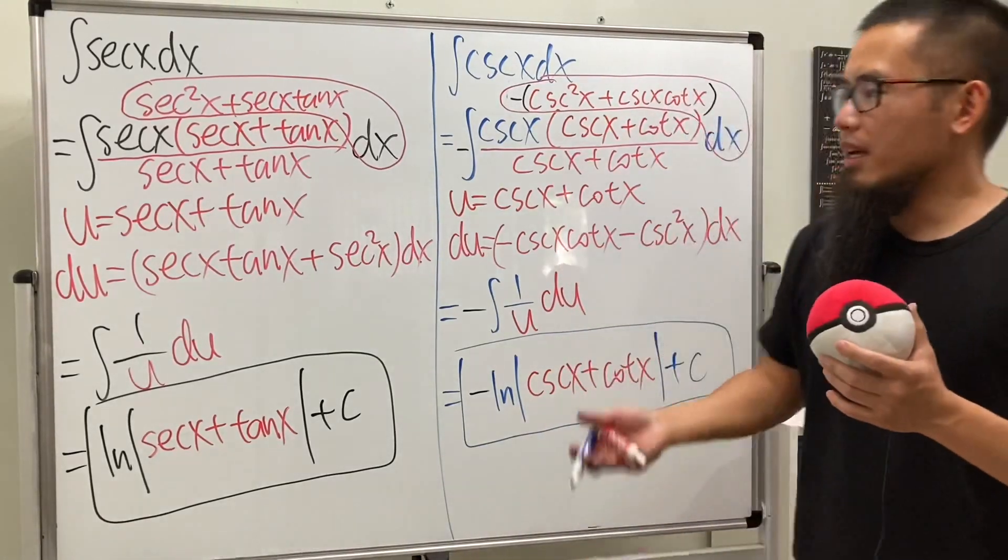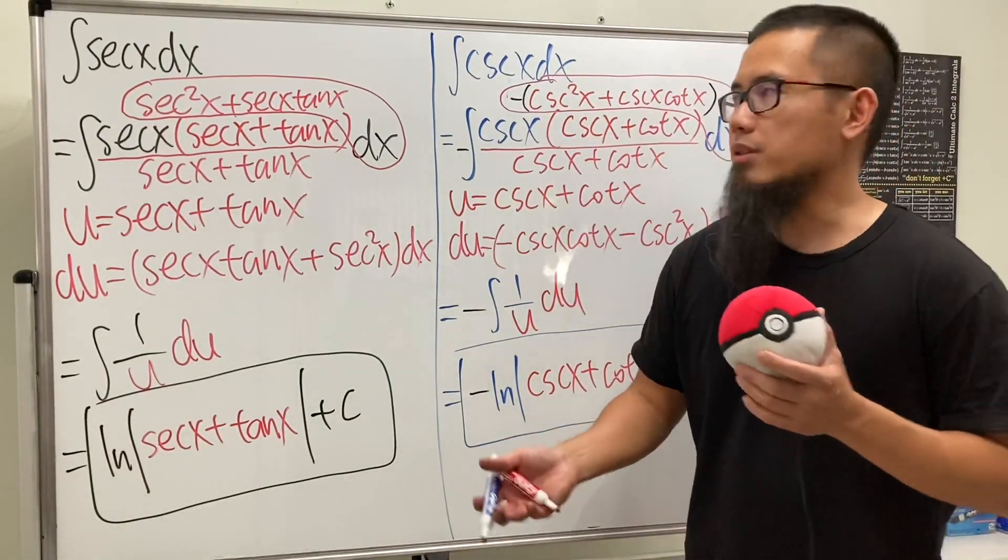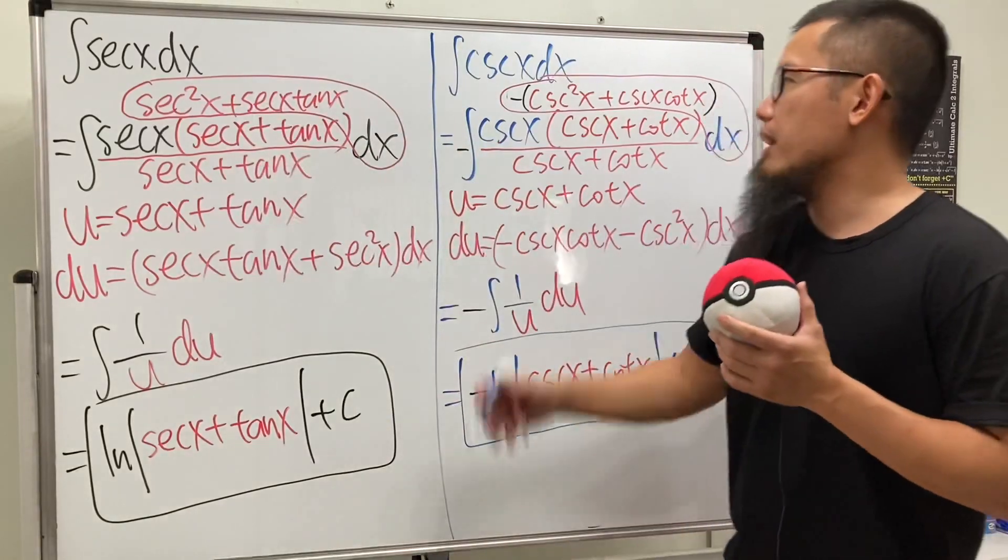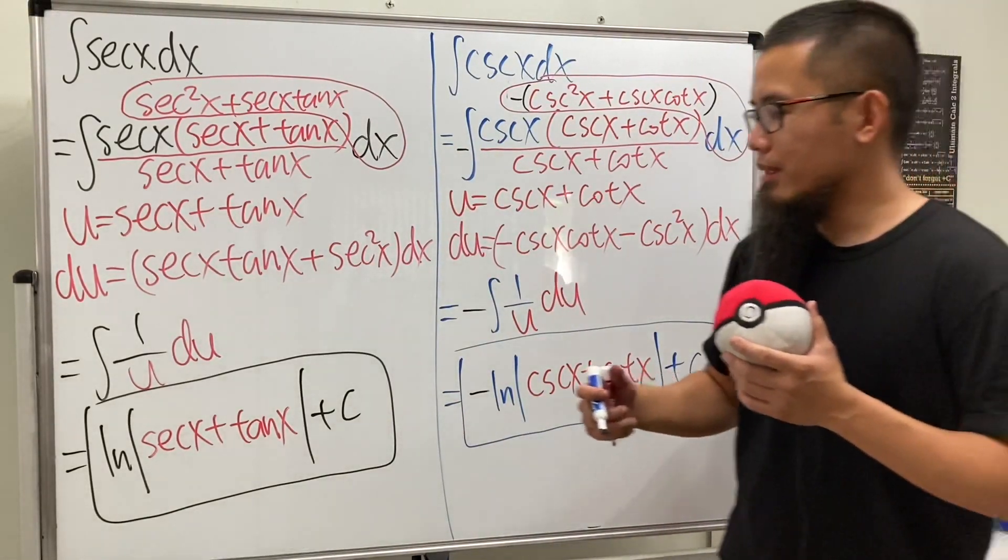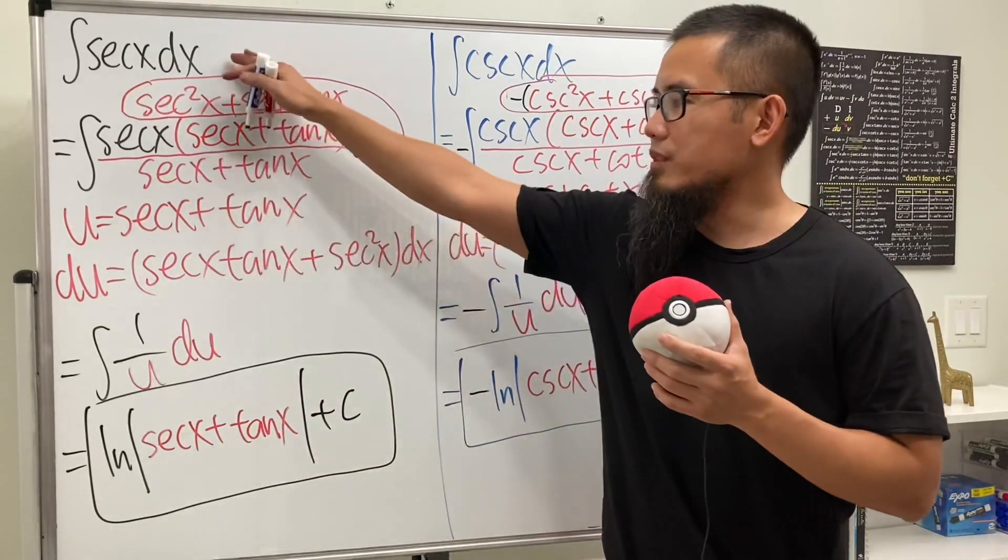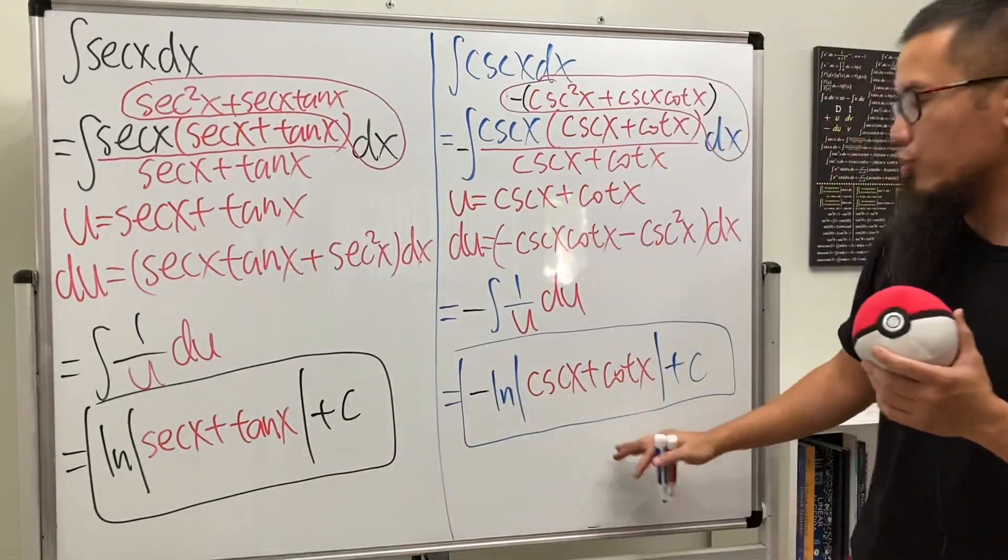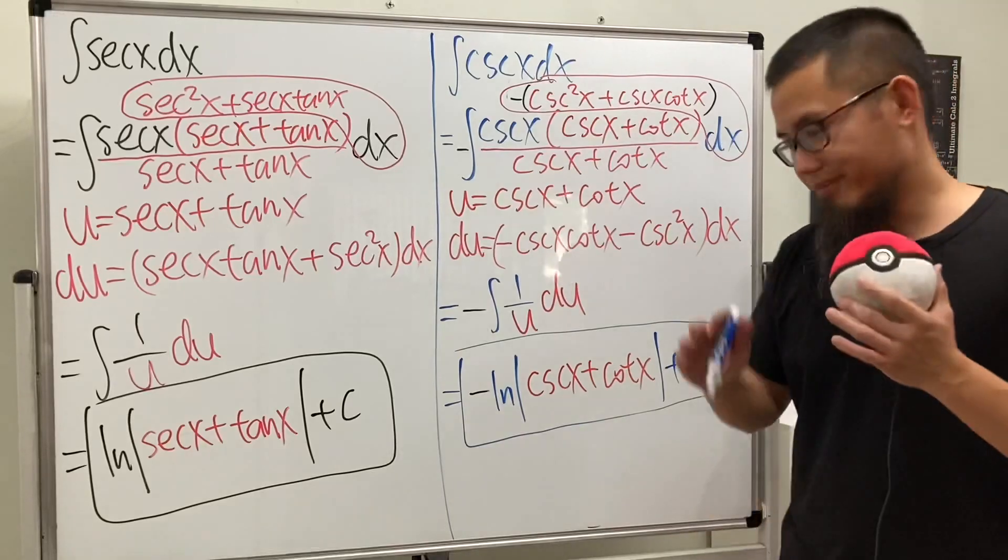So this is it. And I will tell you guys that these two right here are the standard results of secant x and also cosecant x. And you can just use this later on when you see the integral of secant x. So remember this and also remember that. All right? So that's it.